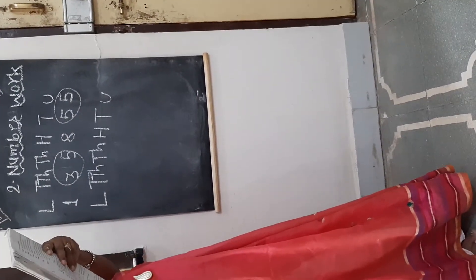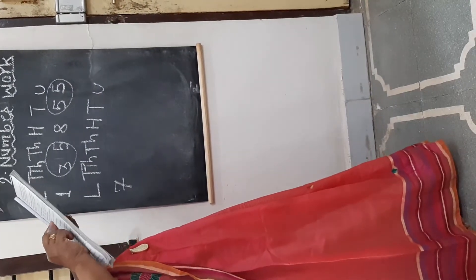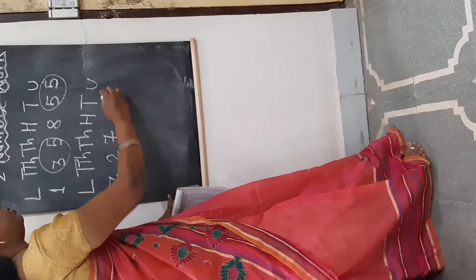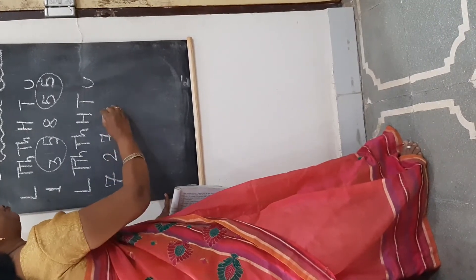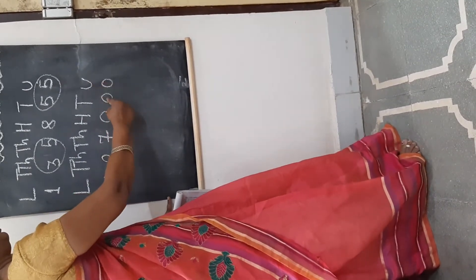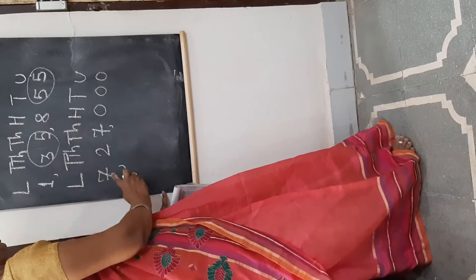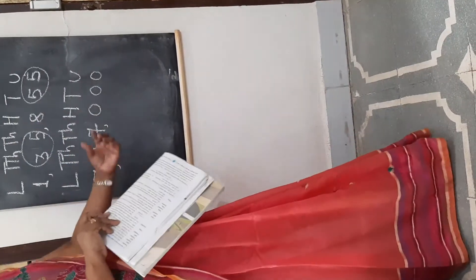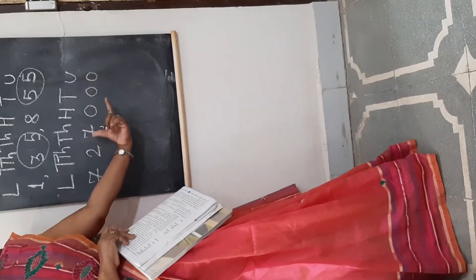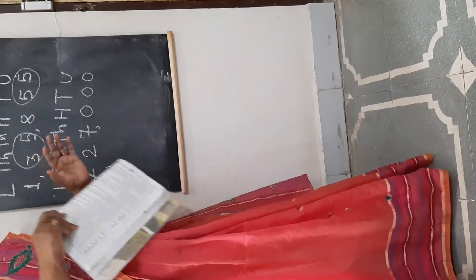Now think: how many lakhs? 7 lakh, so 7 will come here. Then 27,000 — only 27,000. The next digits are not there, so after 27, zeros fill the 100, 10, and unit places. Count from unit: 10, 100, 1000, 10,000, and lakh. So this number is 7,27,000.